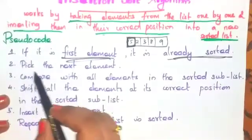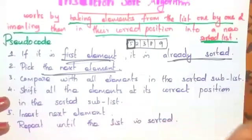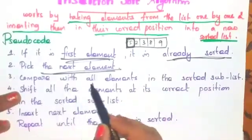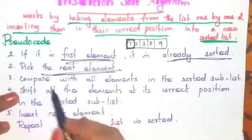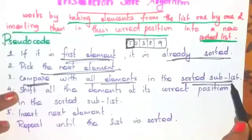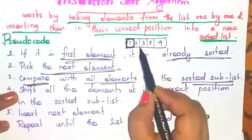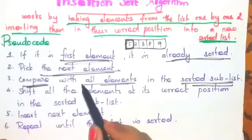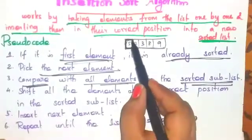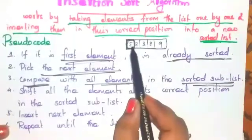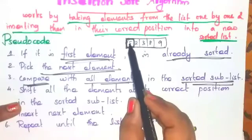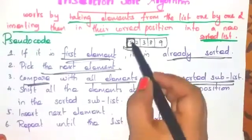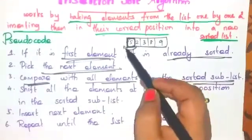In the second step, pick the next element — element two. Compare with all elements in the sorted sub-list. This element is sorted; these elements are not sorted. Compare this second element with all elements in the sorted sub-list. Which one is greater? Five. Which one is smaller? Two. So, you have to insert this two here in the sorted list, because five is greater than two.